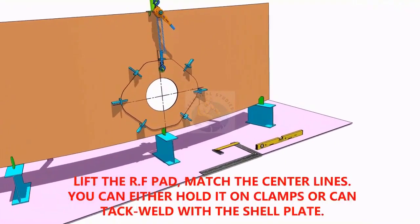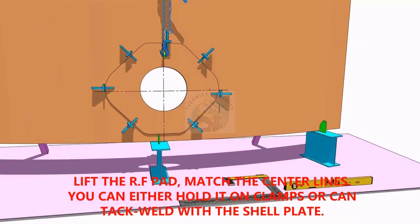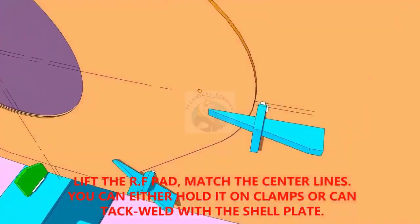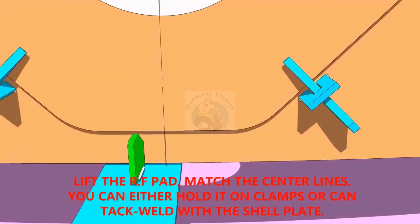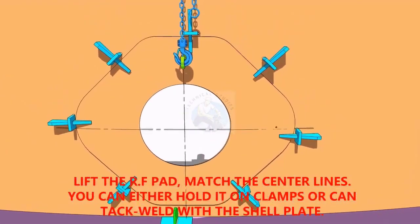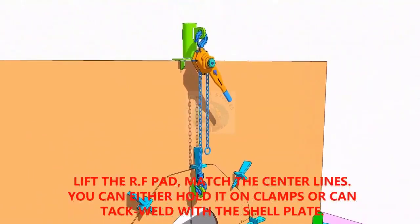TAC weld the reinforcement pad on the shell plate. You can either TAC weld directly on the shell or fix it with clamps as shown. Make sure the center lines on the shell plate and the pad are matching.